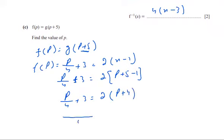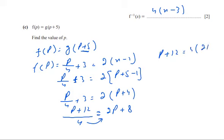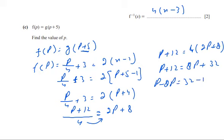From p/4 + 3 = 2p + 4, multiplying both sides by 4 gives p + 12 = 4(2p + 8), so p + 12 = 8p + 32. Therefore p - 8p = 32 - 12, so -7p = 20, and p = -20/7. That is the answer.